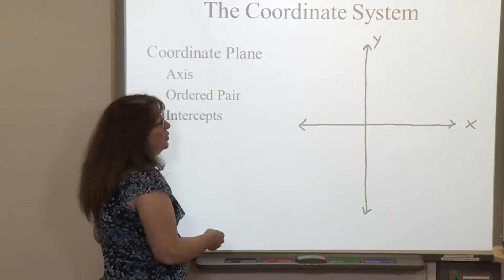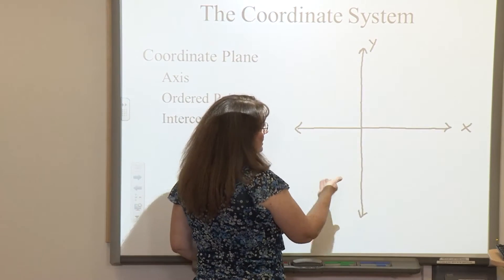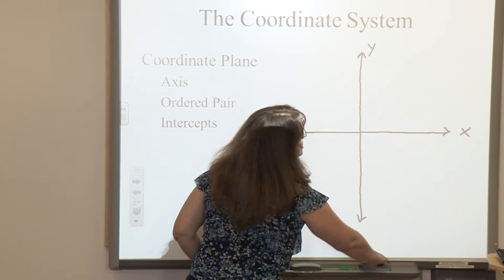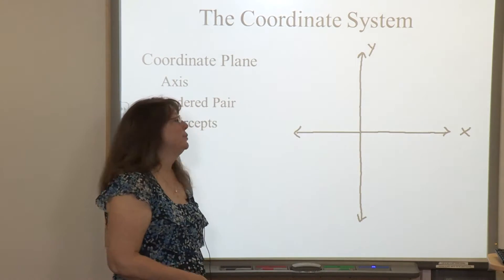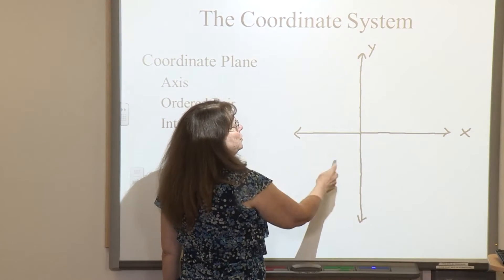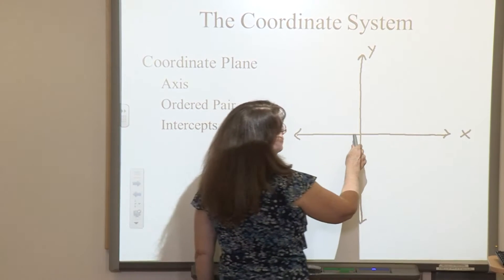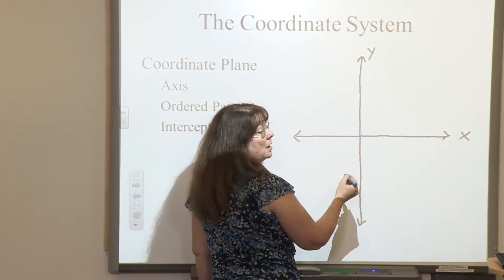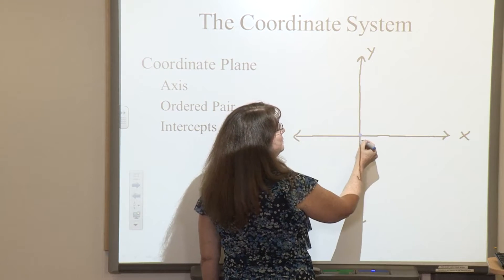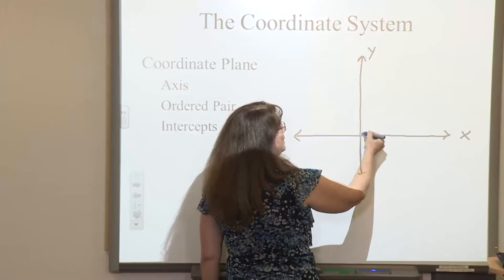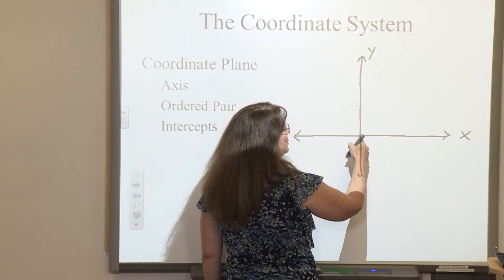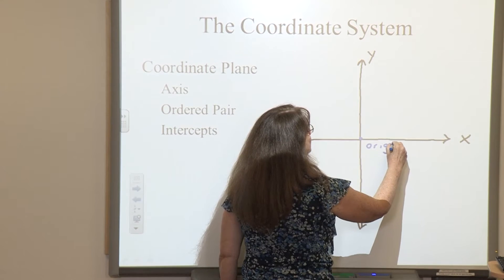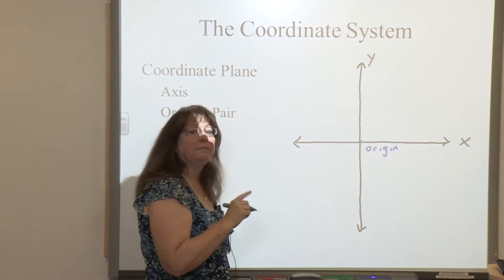You have two axes. You have a horizontal one, which is the x-axis, and the vertical one, which is the y-axis. You'll notice this actually divides the plane up into four different quadrants: one, two, three, and four. All the numbers from the place where the two axes cross are going to be positive to the right and negative to the left, or positive going up and negative going down. The place where the two axes cross is called the origin, and usually you'll start counting from that point.